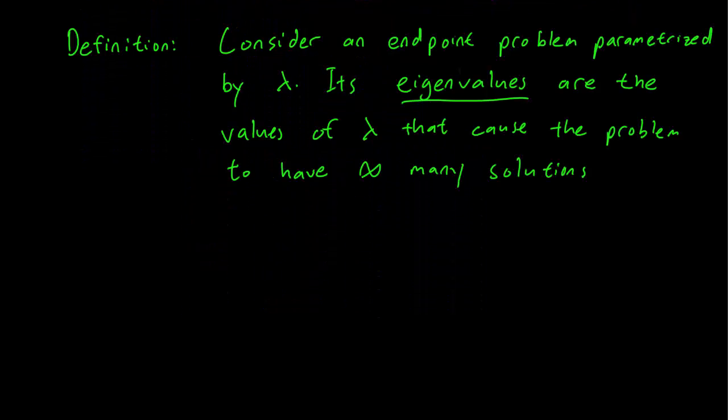So we consider this definition. Let's consider an endpoint problem parameterized by a lambda. We say the eigenvalues of that problem are the values of lambda that cause the problem to have infinitely many solutions.